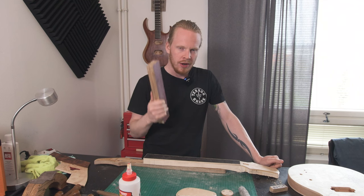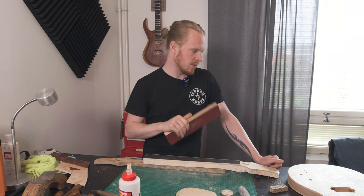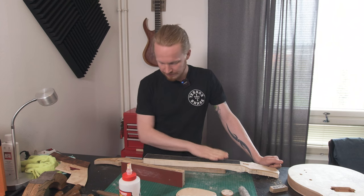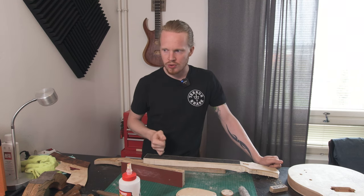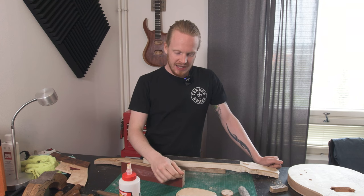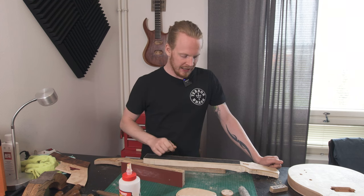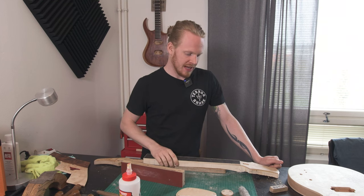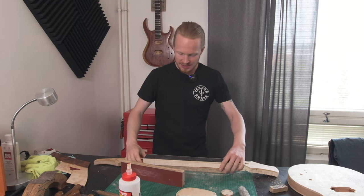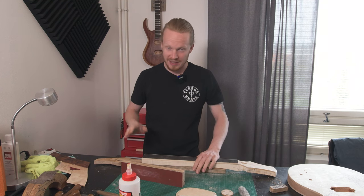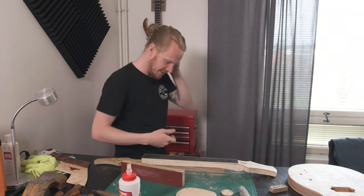16 inch radius gauge, radius block. Already checked that the neck is absolutely straight and flat. I'm gonna go through 120, 150, 240 working up the grits until I get the fretboard looking pretty good. Actually 120, 150, and then once I have the radius done we're gonna work on the inlays.